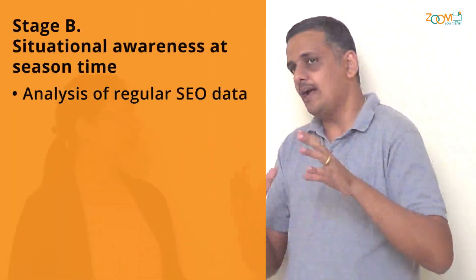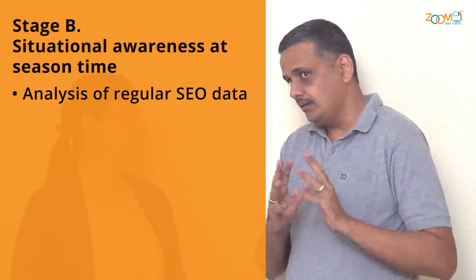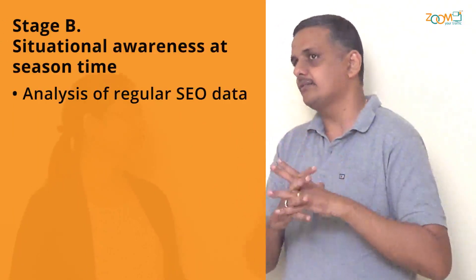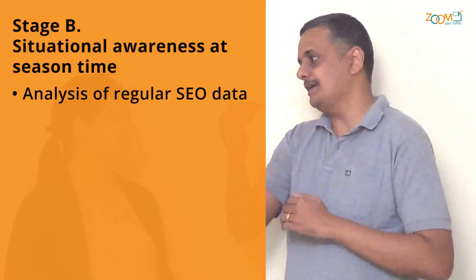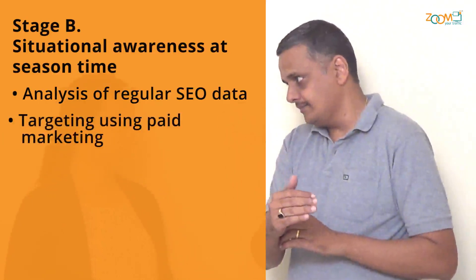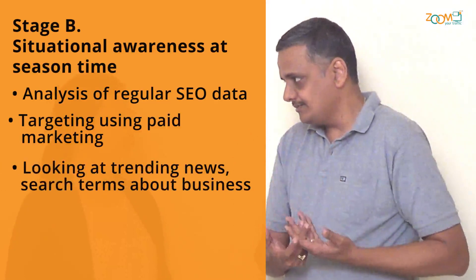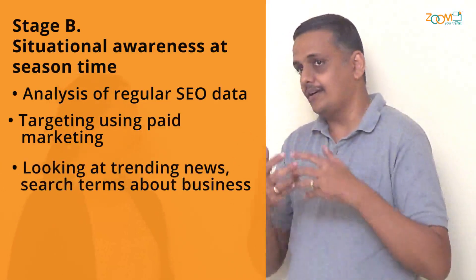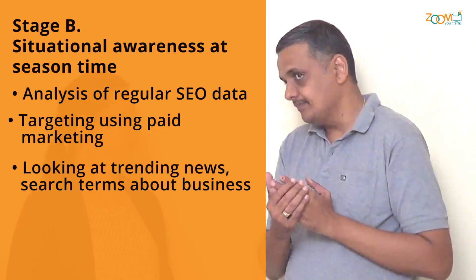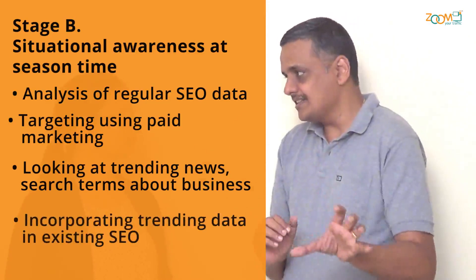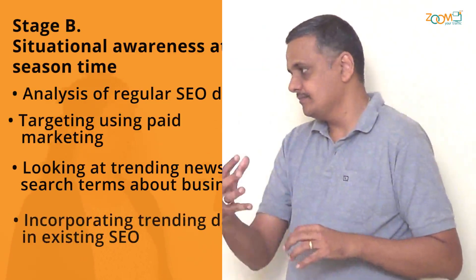Now, when the season is about to start, you have data from your regular SEO on what's working and what results you are experiencing. You can then tweak it to the next level using paid marketing to give a boost. The second aspect is trending — trending news and trending search terms around your business. You incorporate that into your already existing SEO to build on something which is already there, giving you that leverage and push rather than starting everything from scratch every time.